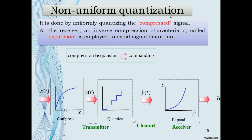In non-uniform quantization, a variable step size is used. It is achieved by uniformly quantizing the compressed signal. At the receiver, an inverse compression characteristic called expansion is employed to avoid signal distortion. Compression plus expansion is called companding. Companding compresses the signal at the transmitter and expands it at the receiver. For example, signal X(t) is compressed to Y(t), uniformly quantized to Ŷ(t), and at the receiver expanded to get X̂(t).